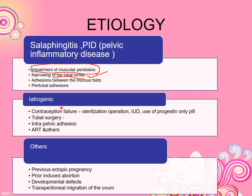Next is iatrogenic causes. These include contraception failure — if you have permanent contraception and it fails. In operations such as tubal ligation, a band may reattach to the tube, allowing conception. IUD use and use of progesterone are also causes. Tubal surgery and intrapelvic adhesions are additional iatrogenic causes, as well as ART and other procedures.